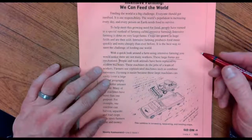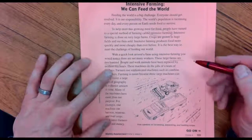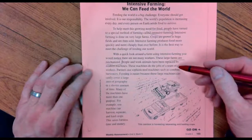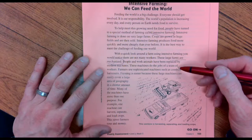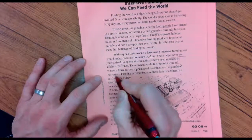These large farms are mechanized. People and work animals have been replaced by modern machines. These machines do the jobs of a team of workers. Farmers use sophisticated machines such as combined harvesters.